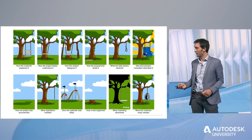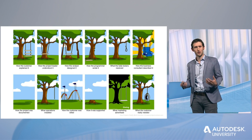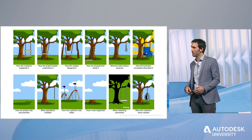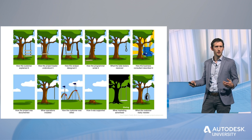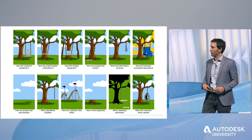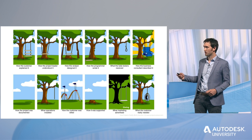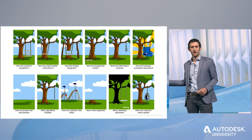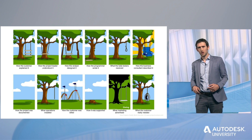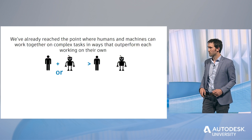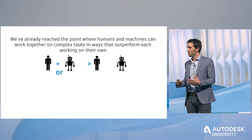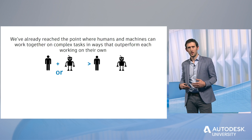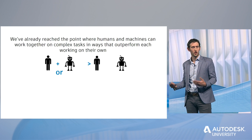There's a cartoon that's been around for a while that does a great job of explaining this — that concept of what people think they're explaining versus how everyone in that process interprets the information, and then of course what the client really needs. We're also moving into this augmented age where the collaborative combination of humans and robots working together is more powerful than either working on its own.